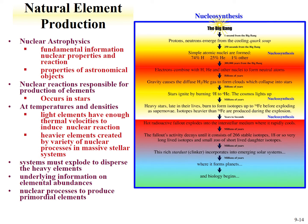An interesting application of nuclear reactions is in terms of natural element production — this is the realm of nuclear astrophysics. We'll take information on fundamental nuclear reactions and apply them to large astronomical objects: stars. Nuclear reactions are responsible for the production of elements occurring in stars. We'll discuss how we go from the Big Bang, where we get neutrons and protons and make simple atomic nuclei and neutral atoms, then gravity takes clouds of hydrogen and helium to form stars.